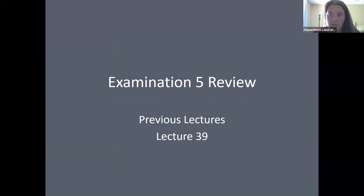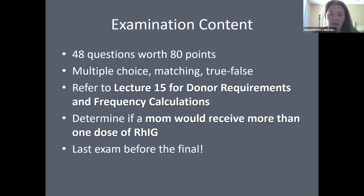If you think about the past lectures, we haven't really covered too much material. So this exam actually covers everything we have previously talked about, including ABO discrepancies, weak D testing, moms and baby, donor collection process, donor deferrals, and special techniques in blood bank such as apheresis collections. The new material for module five that you should concentrate on is quality assurance and quality control.